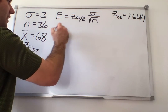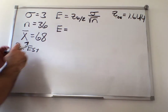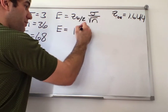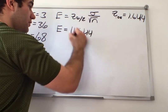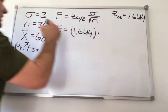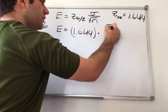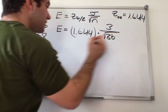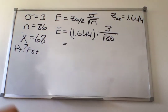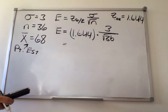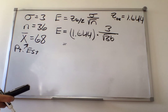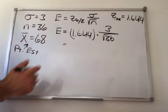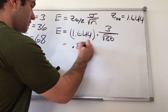Now I need to calculate my error. My error is z alpha over 2, which I found is 1.644, times my sigma, which is 3, divided by square root of my n, which is 36. Plugging into the calculator: 1.644 times 3 divided by square root of 36, and you get 0.822.